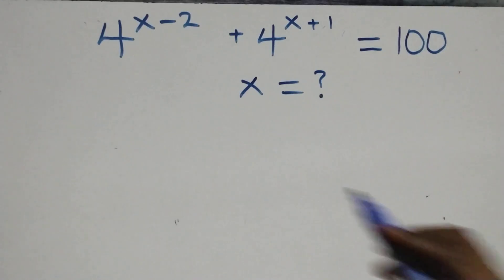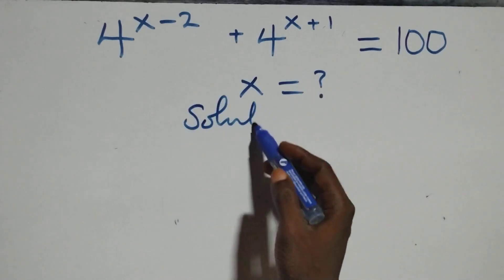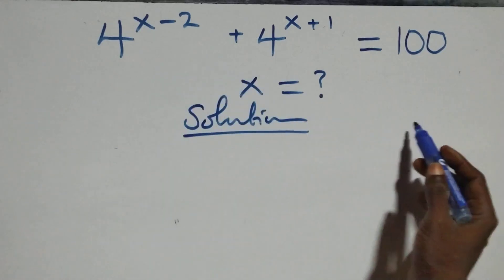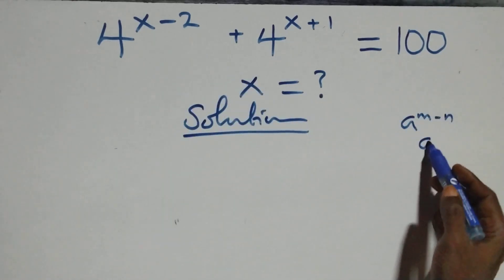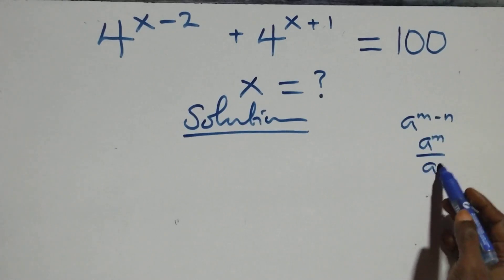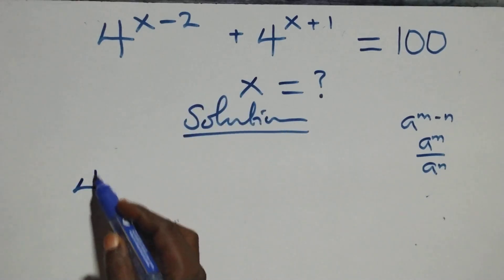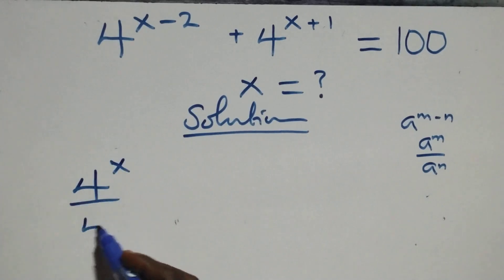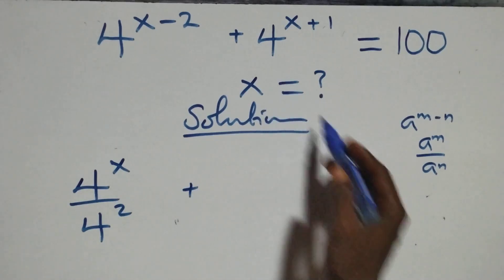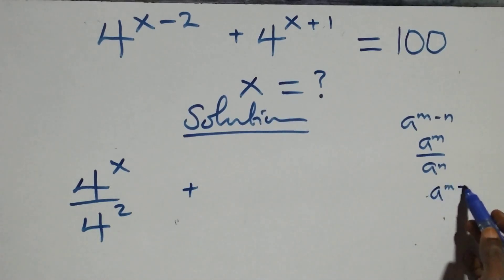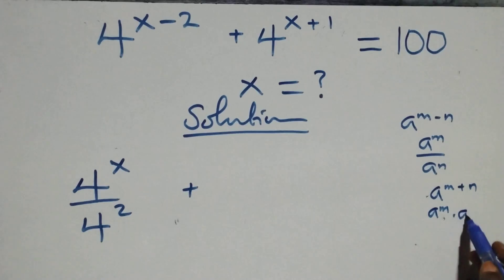Hello, you are welcome. How to solve this nice exponential equation. What we have here follows when we have a raised to power n minus n, which is the same thing as a raised to power n over a raised to power n. That gives us 4 raised to power x over 4 squared, plus this also follows when we have a raised to power m plus n, which is the same thing as a raised to power m times a raised to power n.